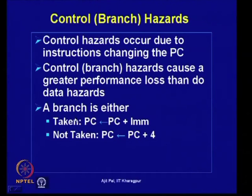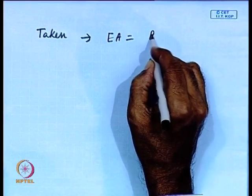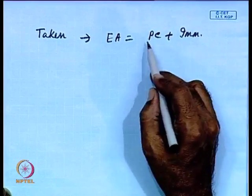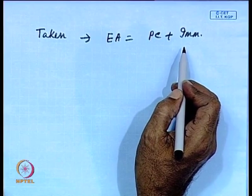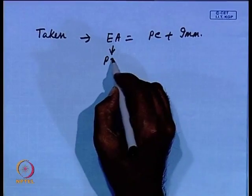A branch can have two outcomes: taken or not taken. In the case of taken, a new address must be generated — the effective address is PC plus the immediate data available as part of the instruction. This effective address is loaded into the program counter to determine where instruction execution should start.